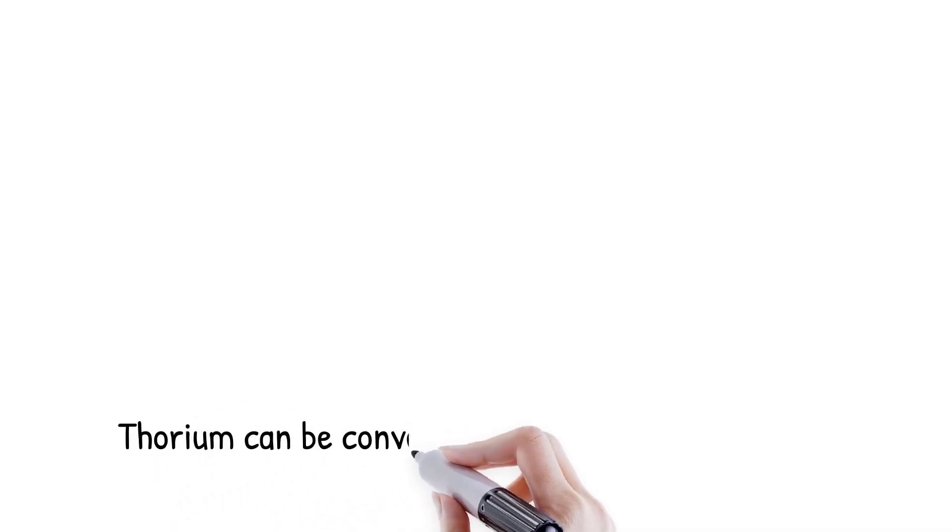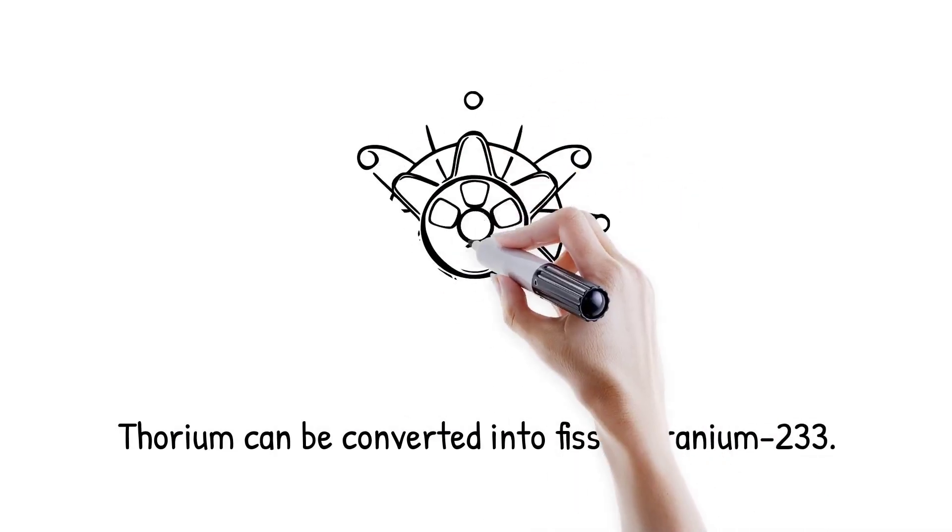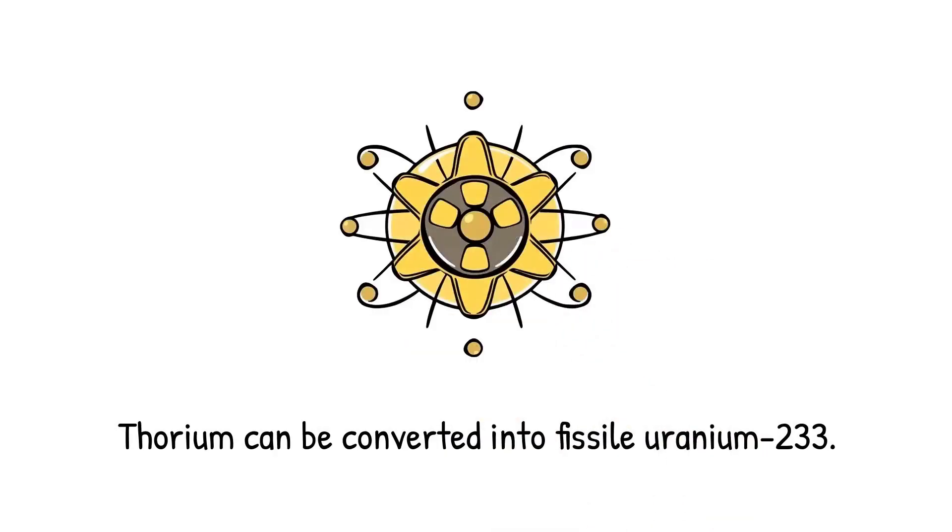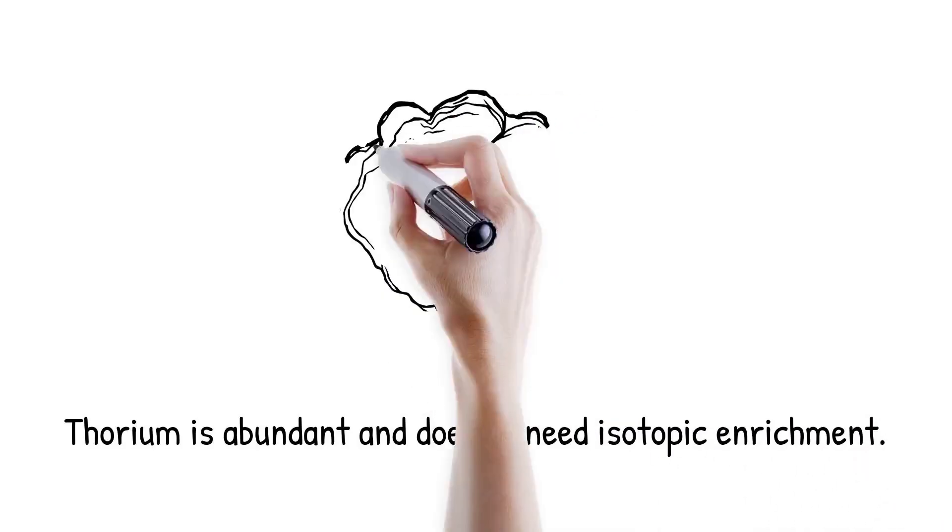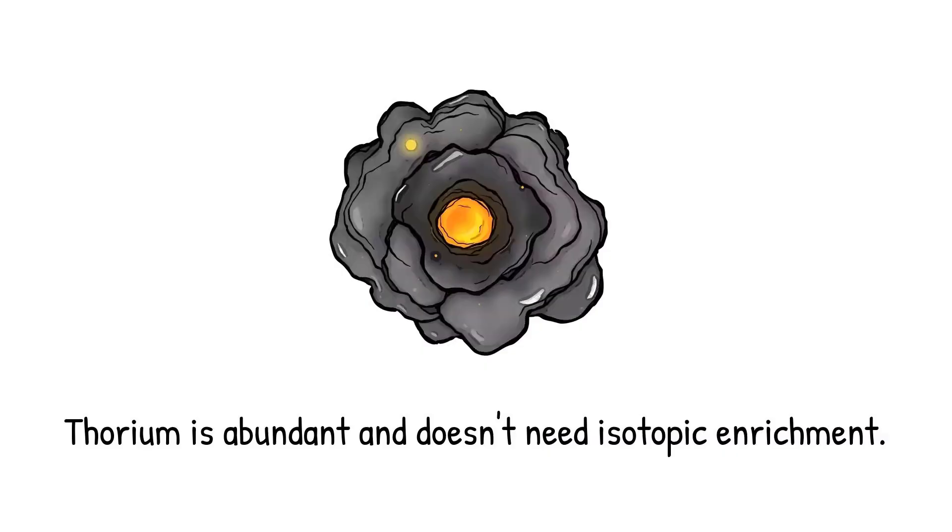Thorium-232 is not, itself, fissile, but can be converted into uranium-233, which is capable of sustaining a chain reaction. This makes thorium a fertile material, requiring an external neutron source to become useful as fuel. Its abundance in Earth's crust is about three times greater than uranium, ensuring long-term availability.